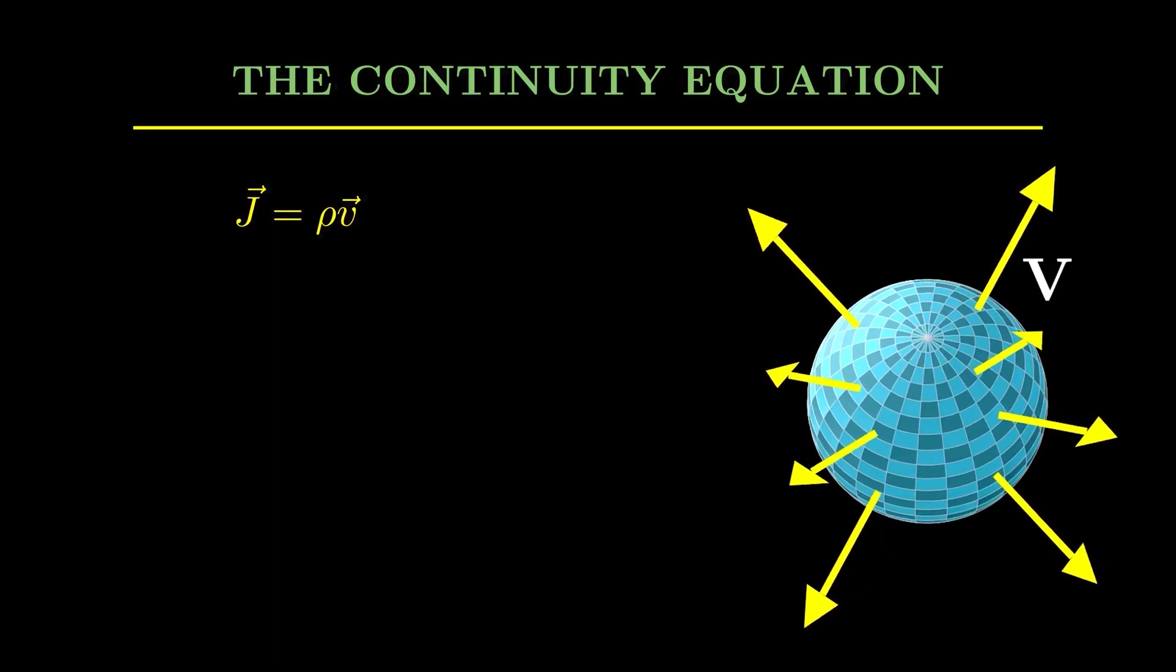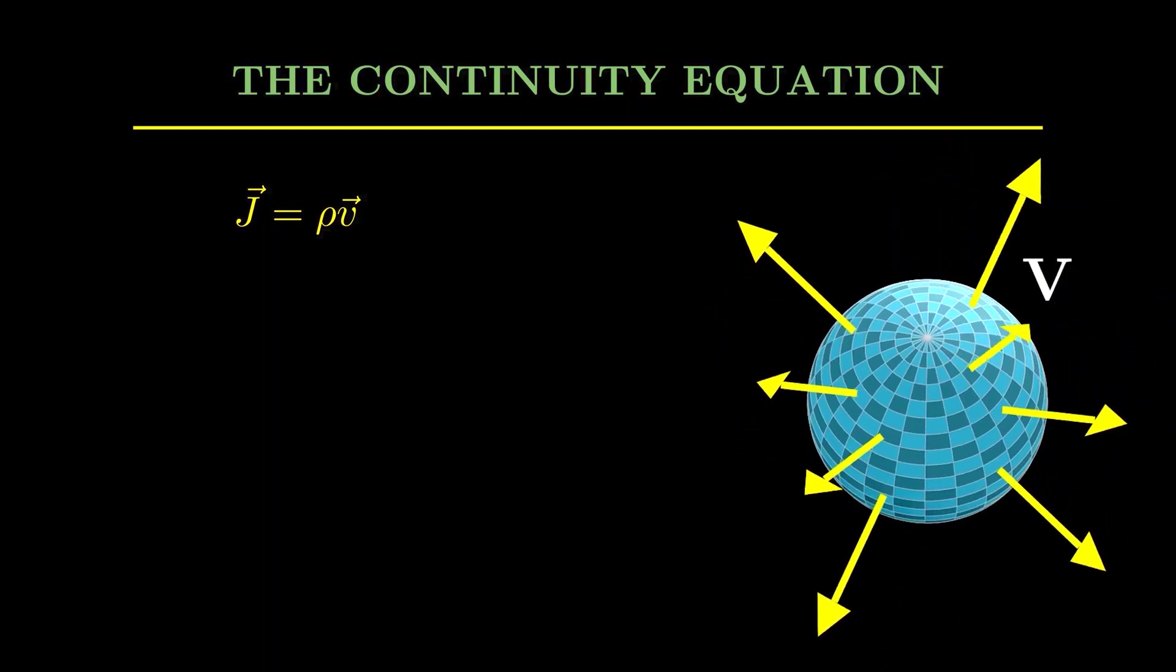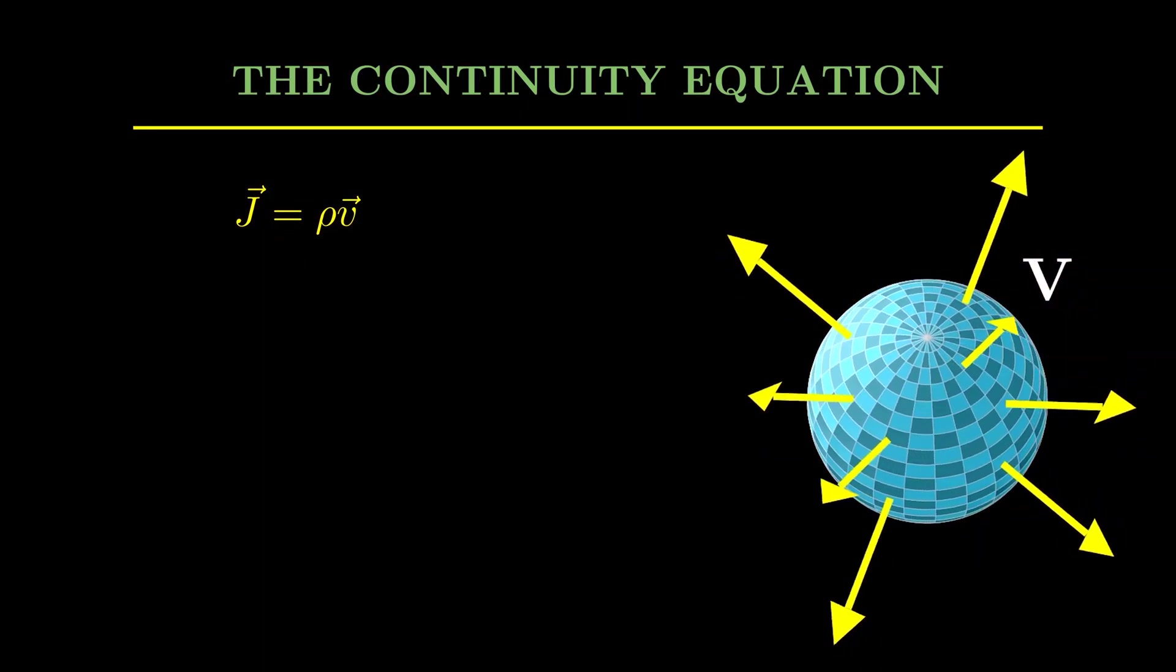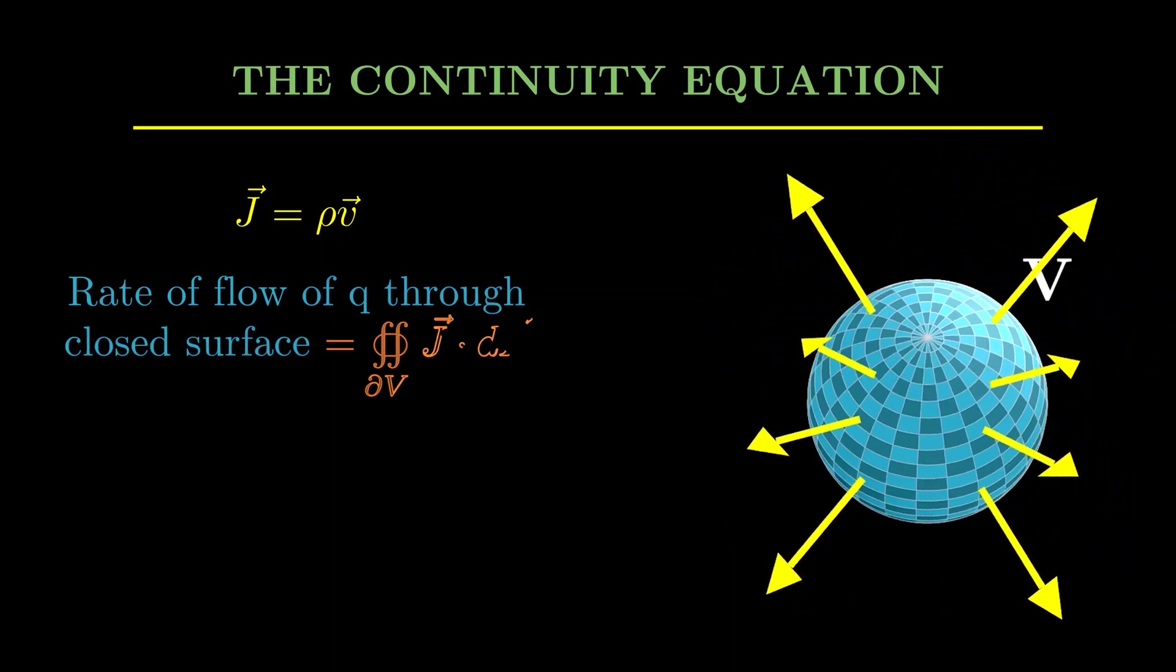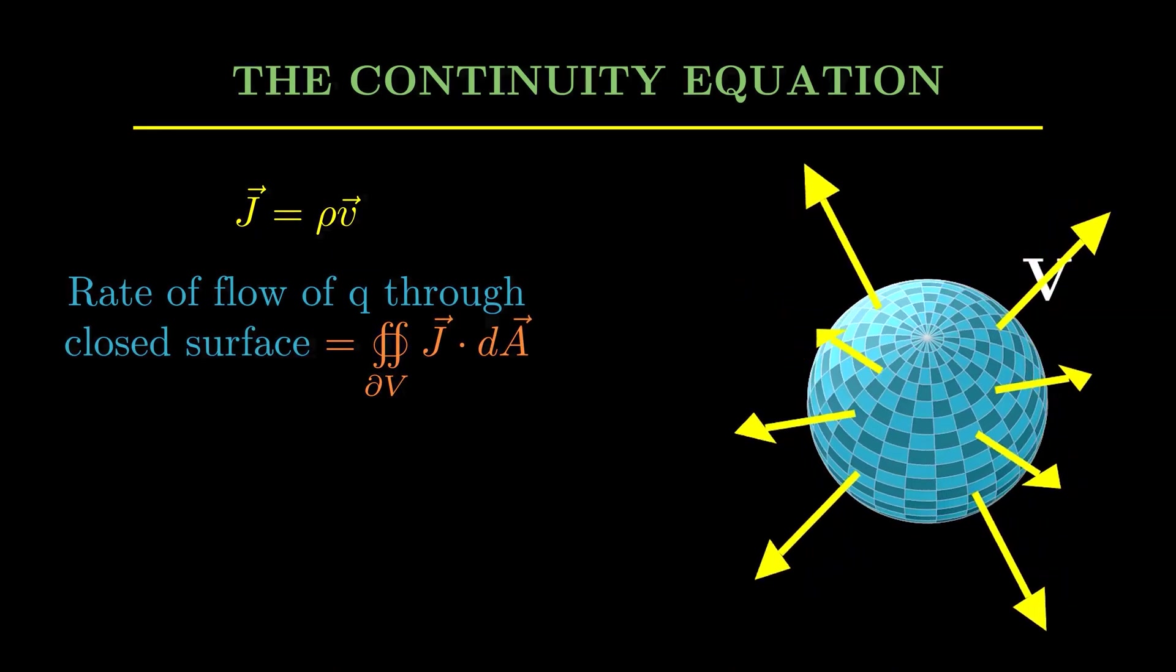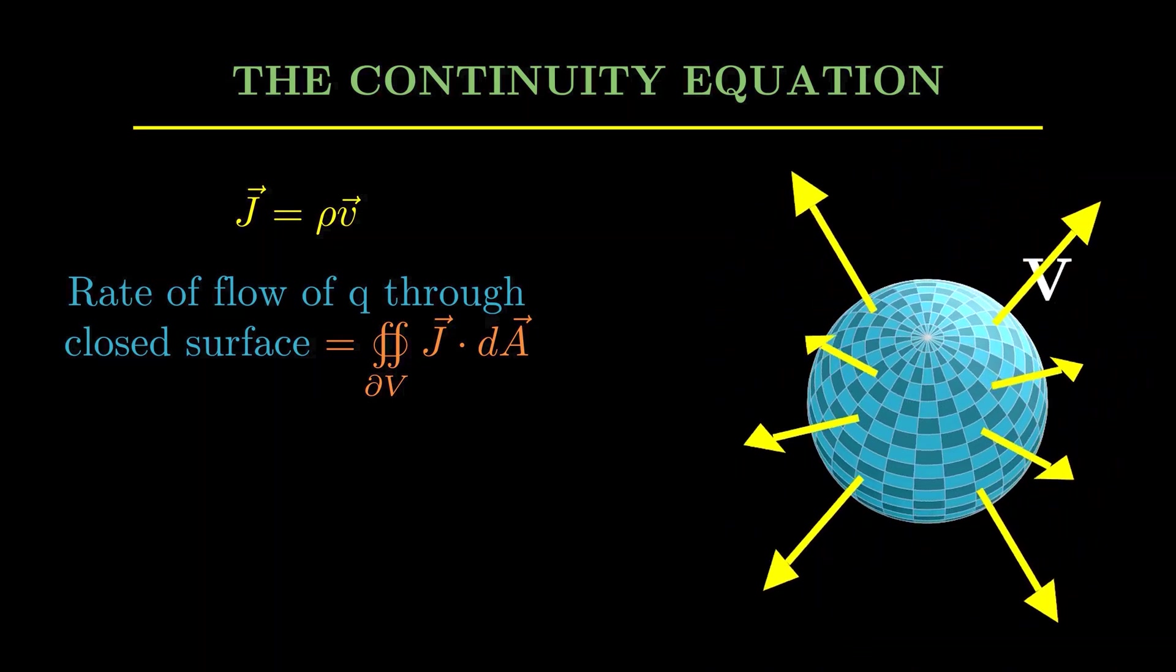This is often represented with a vector field called J, which is equal to the density of that charge or maybe any quantity times the velocity. And this also relates with the rate of flow of Q through the closed surface, which is given by this surface integral.